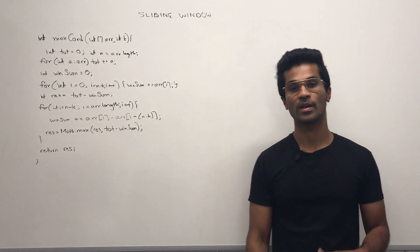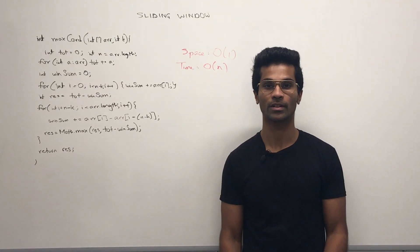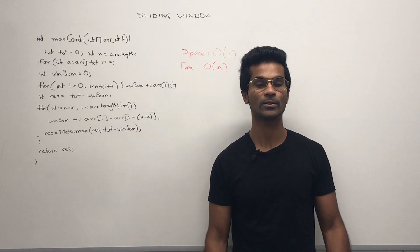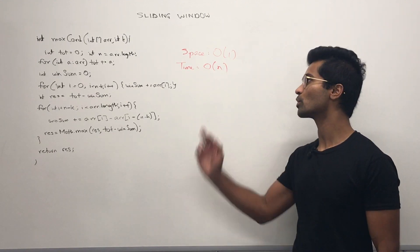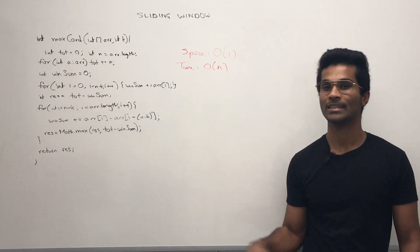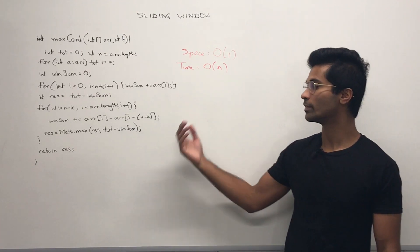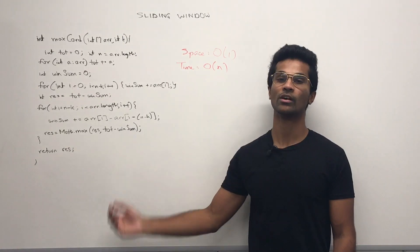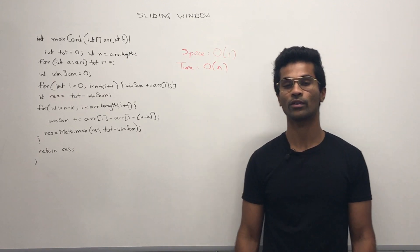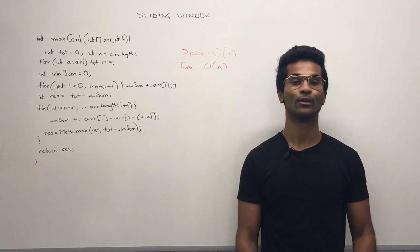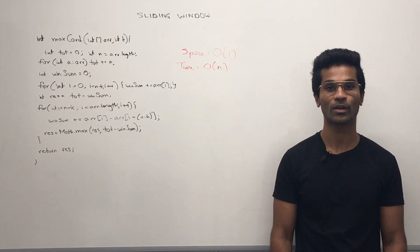Let's look at the space and time complexities. The space complexity is constant — we didn't use any auxiliary arrays or additional data structures, so it's O(1). The time complexity is O(n) because we've iterated over the array of length n. So that's how you solve LeetCode 1423. If you liked the video, please thumbs up, and if you want to see more, don't forget to subscribe.